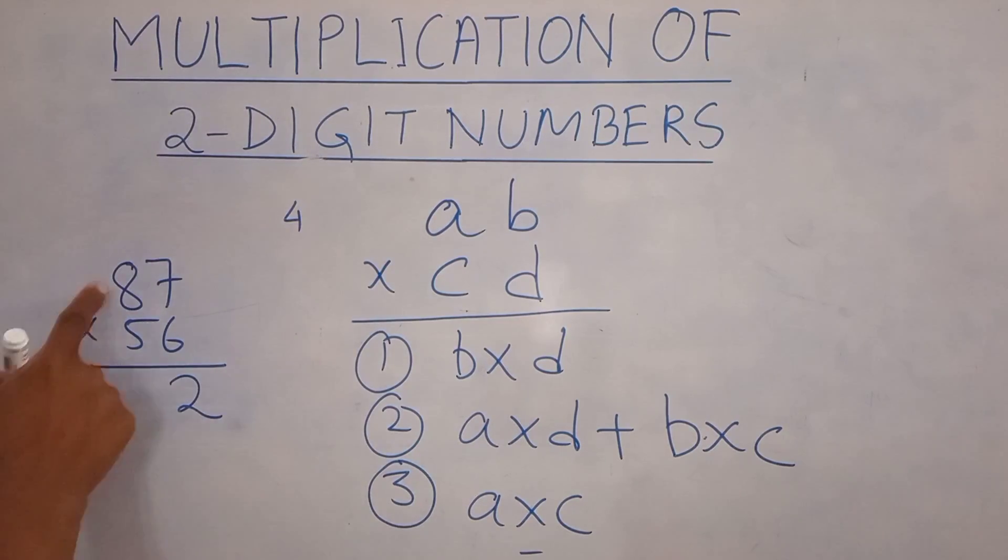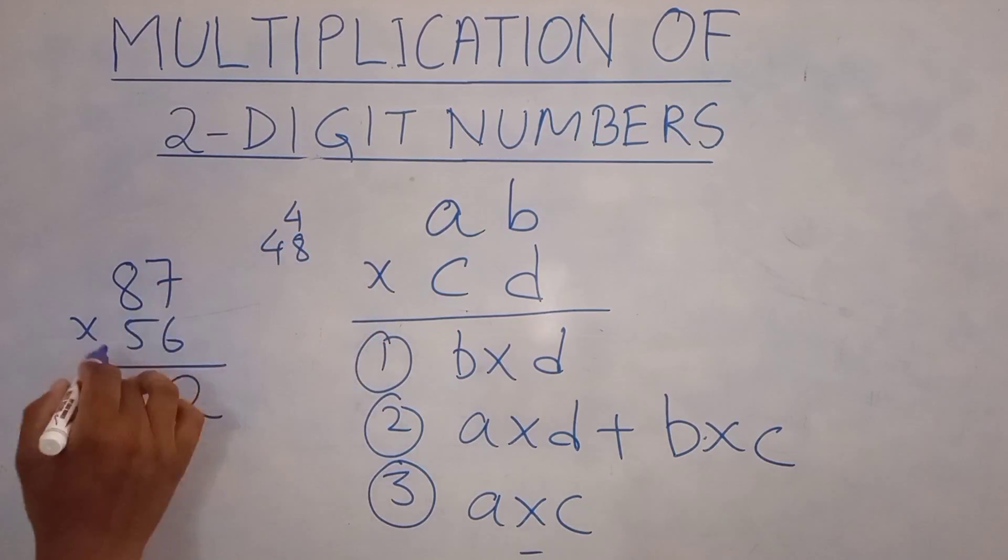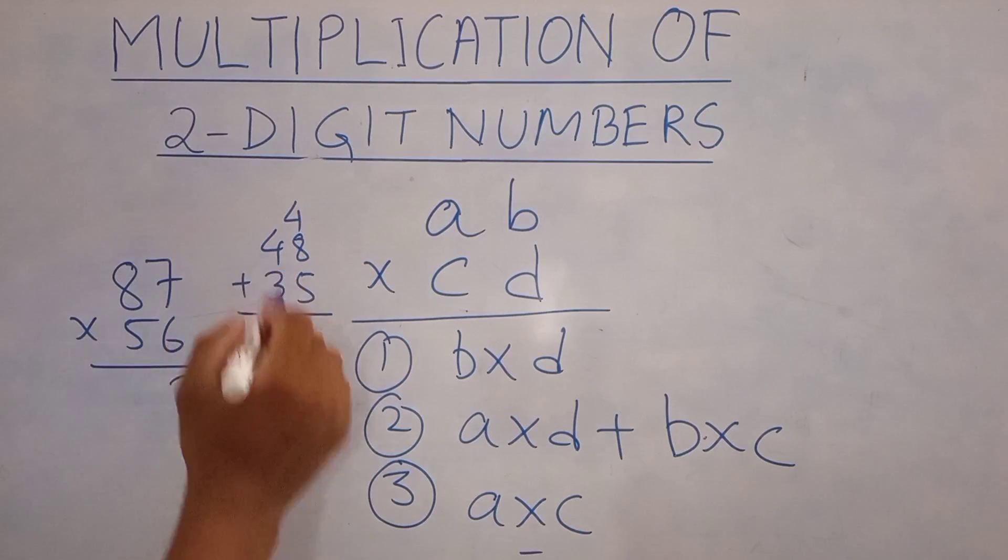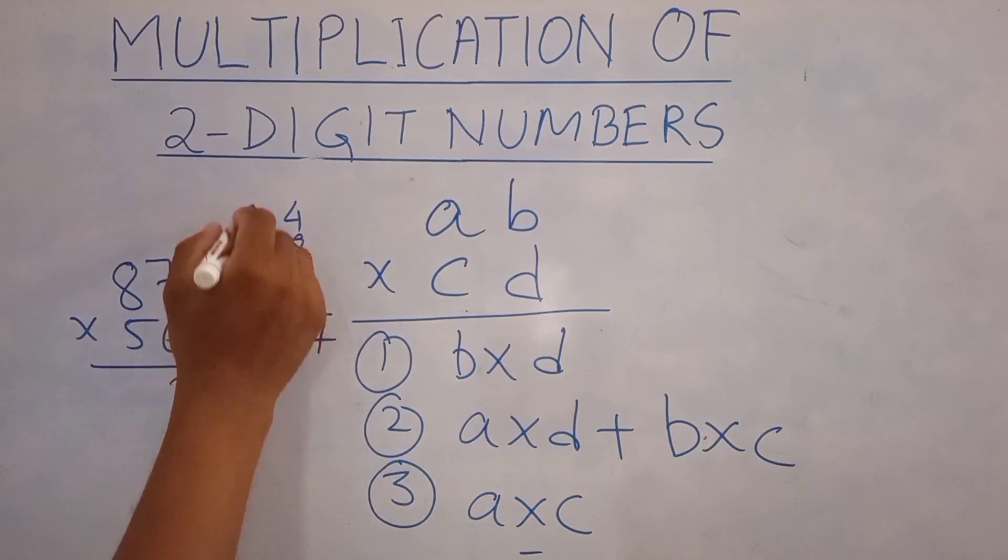Then 8 into 6 is 48 and 5 into 7 is 35. So let's add them up. 8 plus 4 is 12. 12 plus 5 gives you 17. 1 carried.